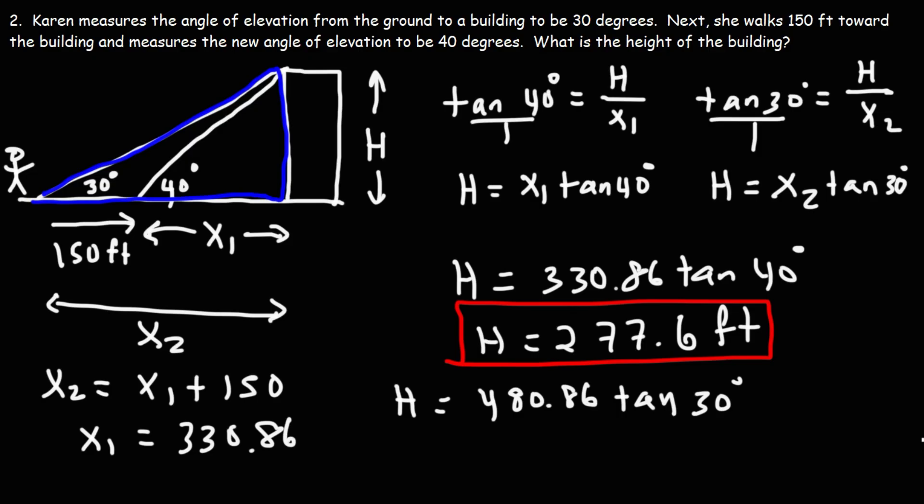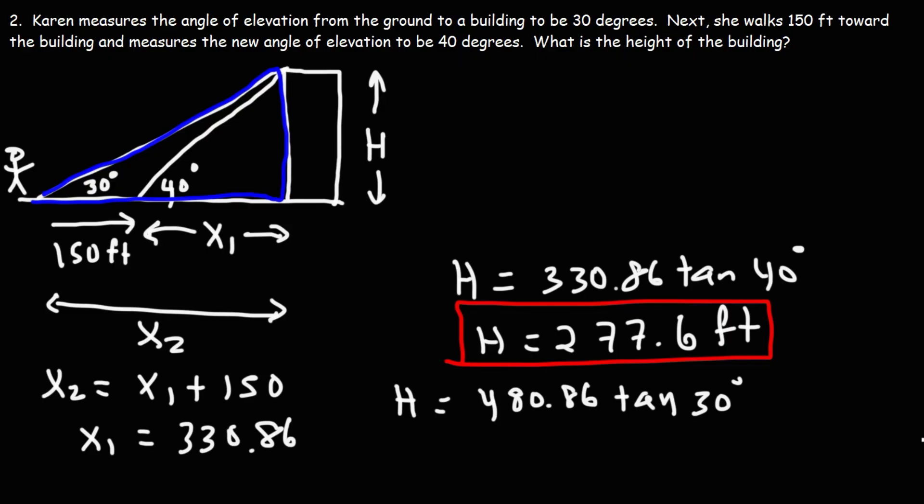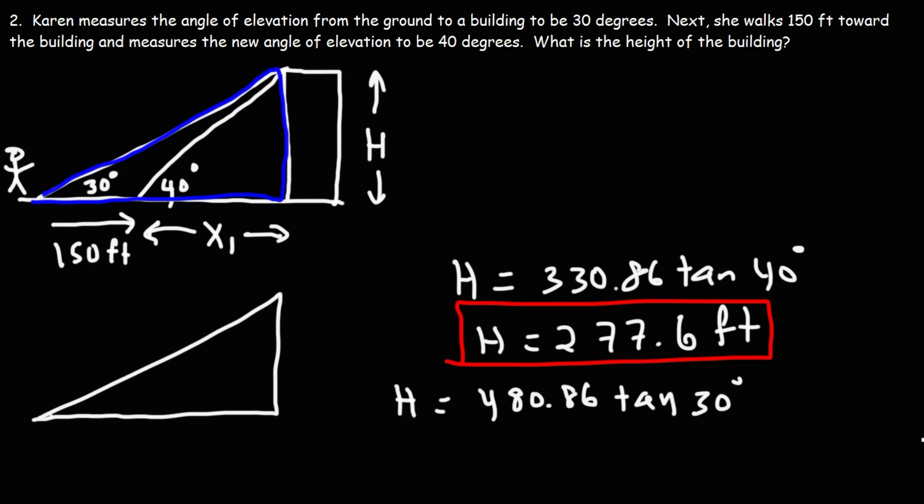Now I'm going to give you a formula that's going to give you the same answer. So let's say you have the same situation. You want to find the height of this triangle or the height of the building. And you know two angles. Let's call this angle alpha and we'll call this angle beta. And you know the distance between the two angles, we'll call that d. And your goal is to calculate h.